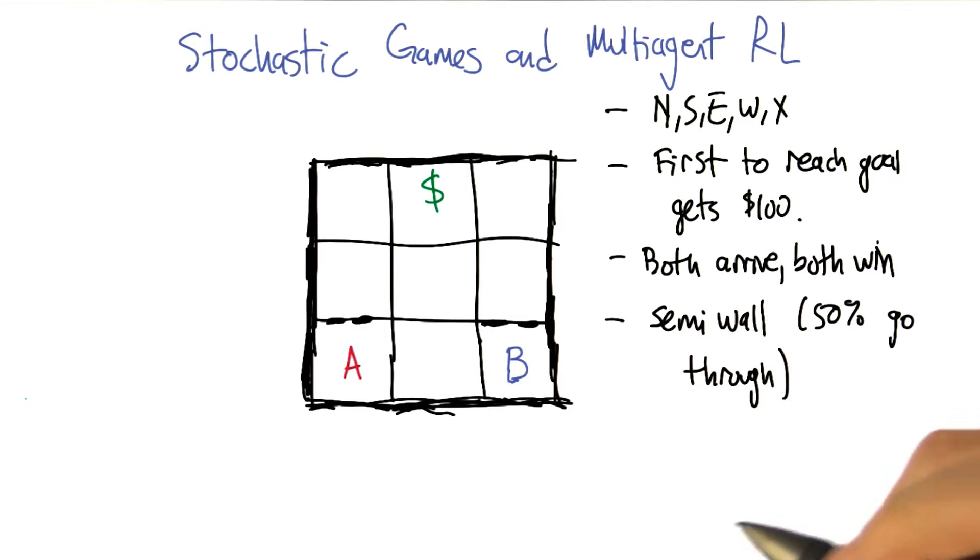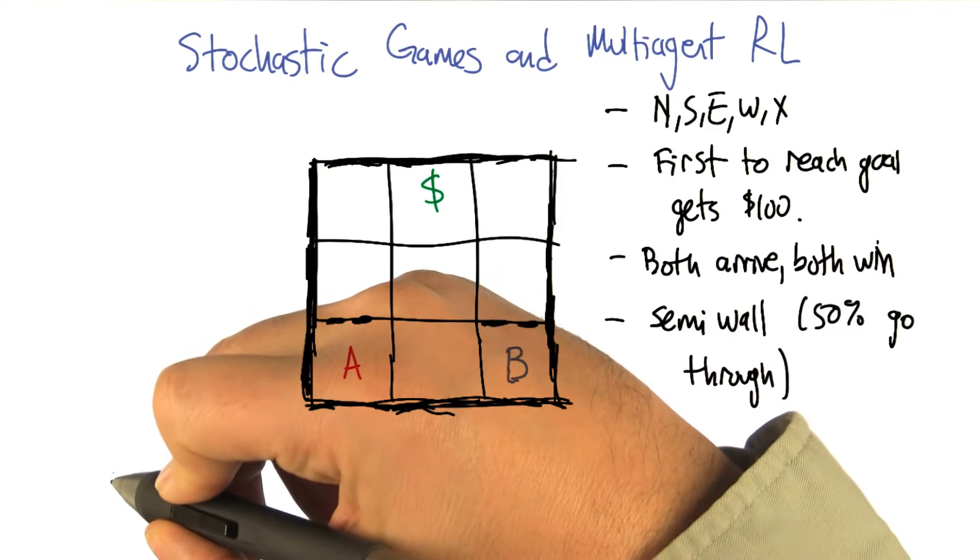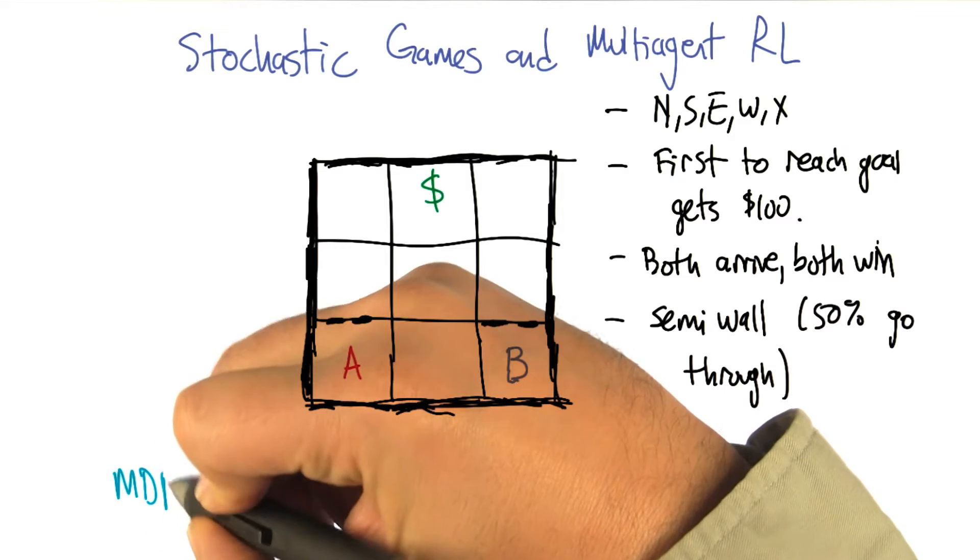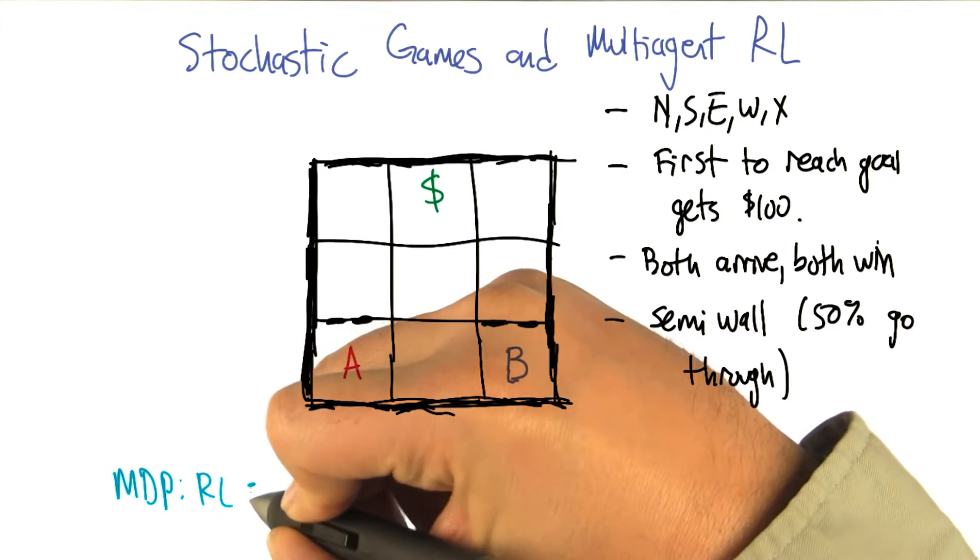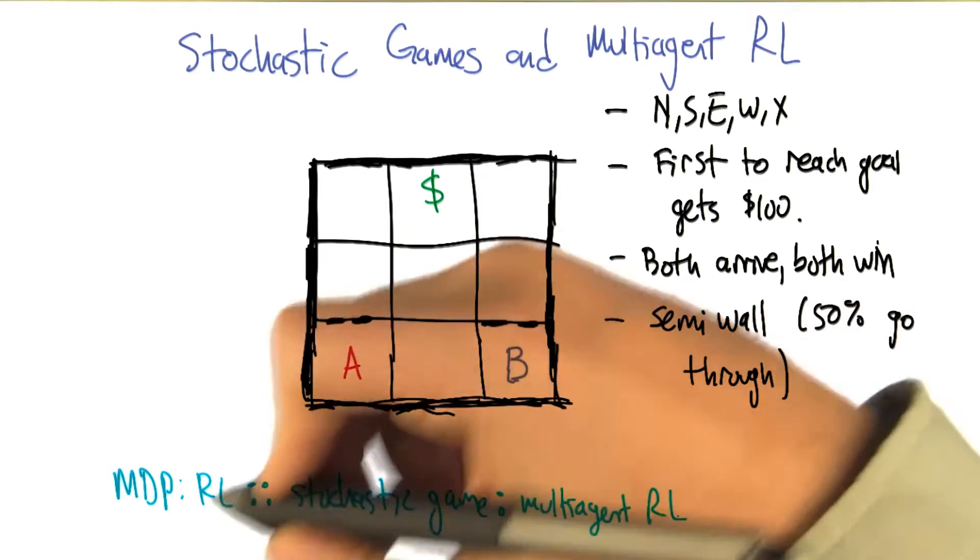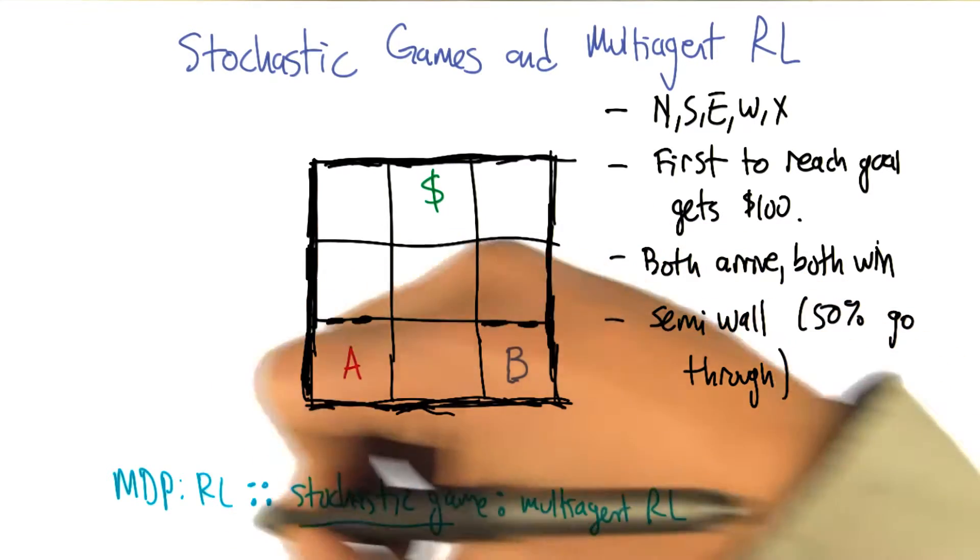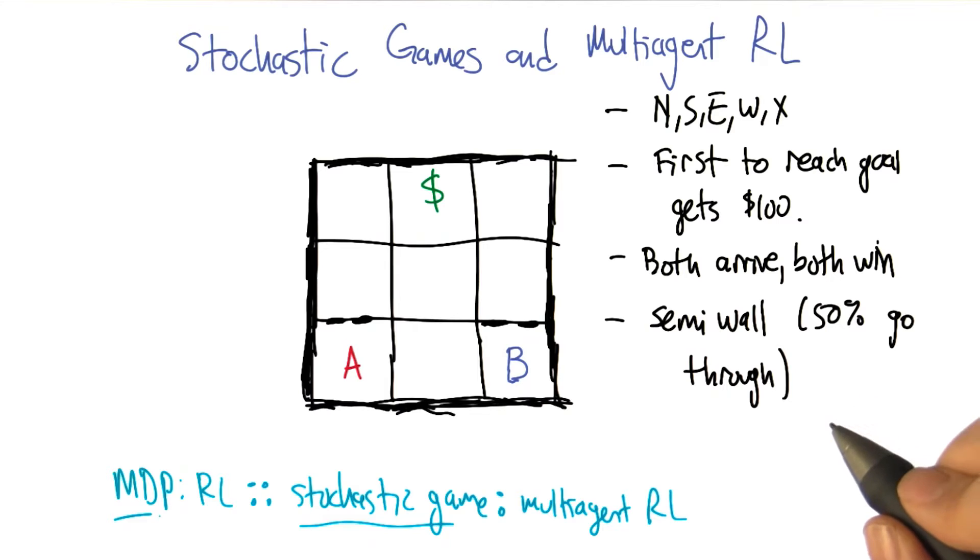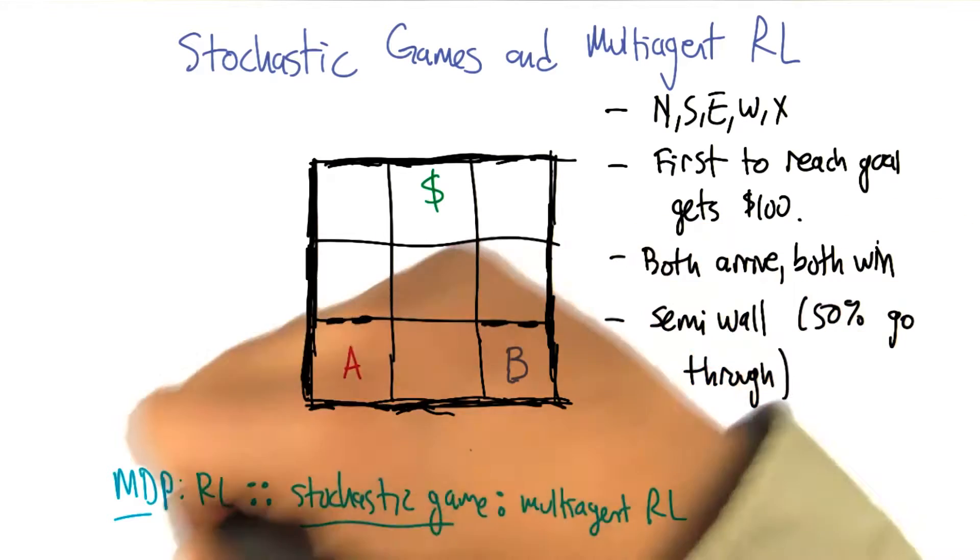In fact, I like to think of this in terms of an analogy, which is something like MDP is to RL as stochastic game is to multi-agent RL. It's a formal model that lets us express the sorts of problems that take place in this formalized problem setting.